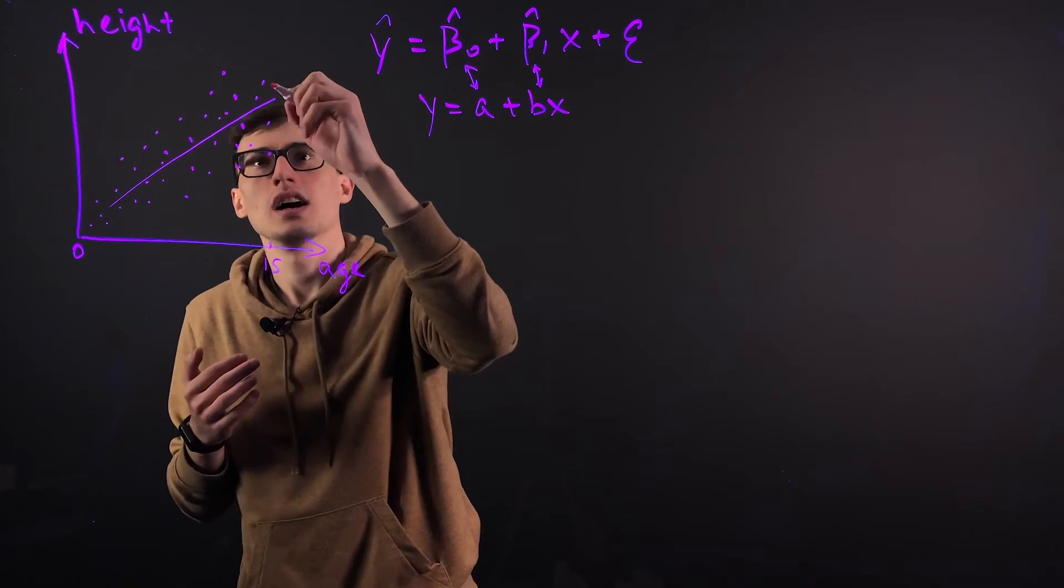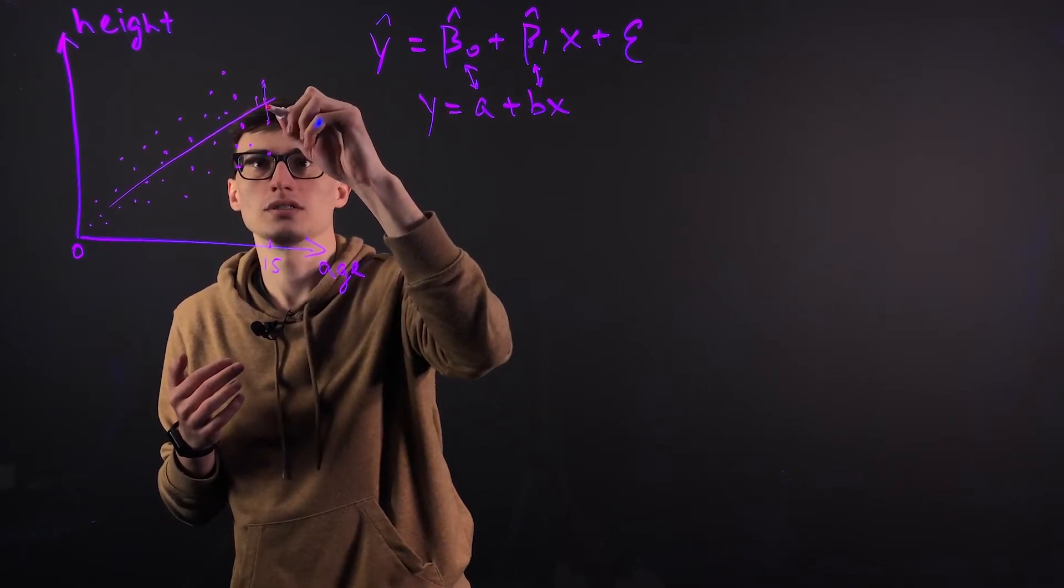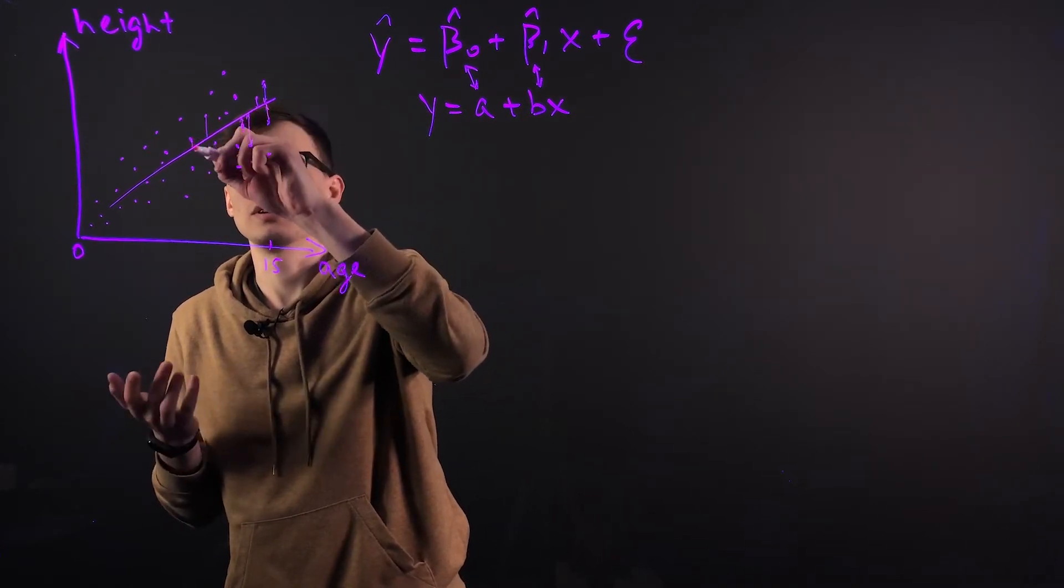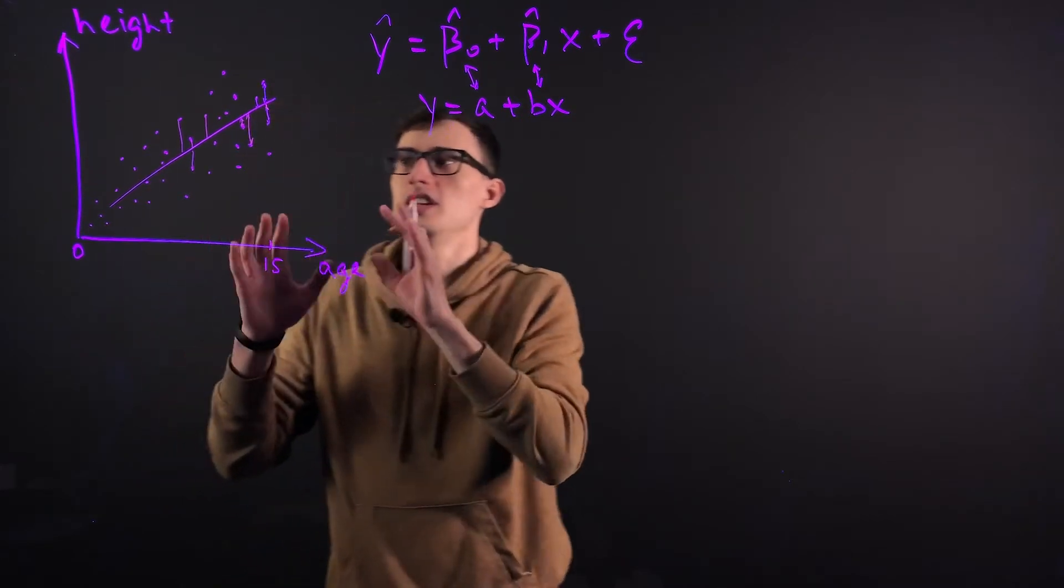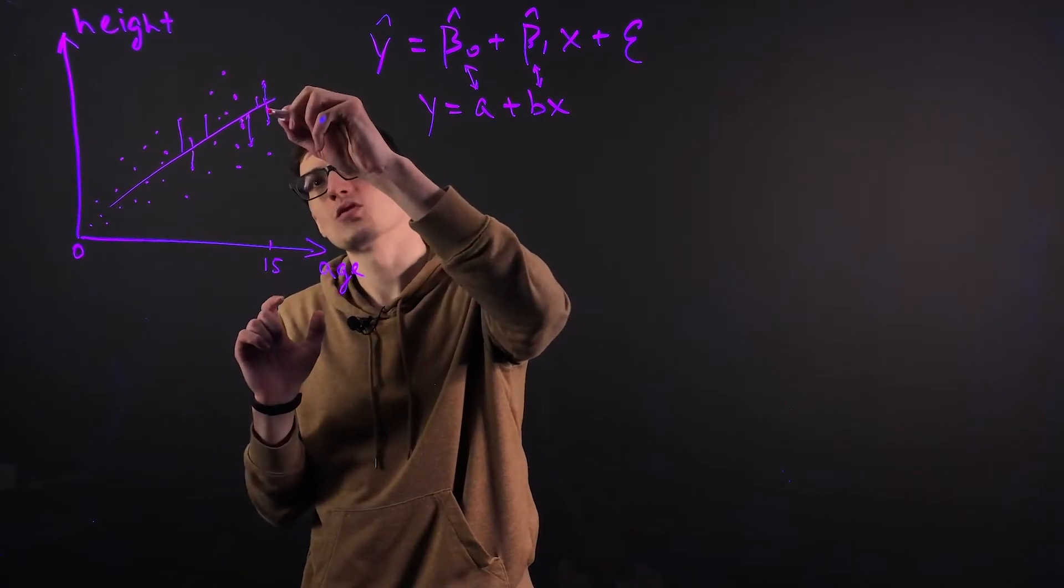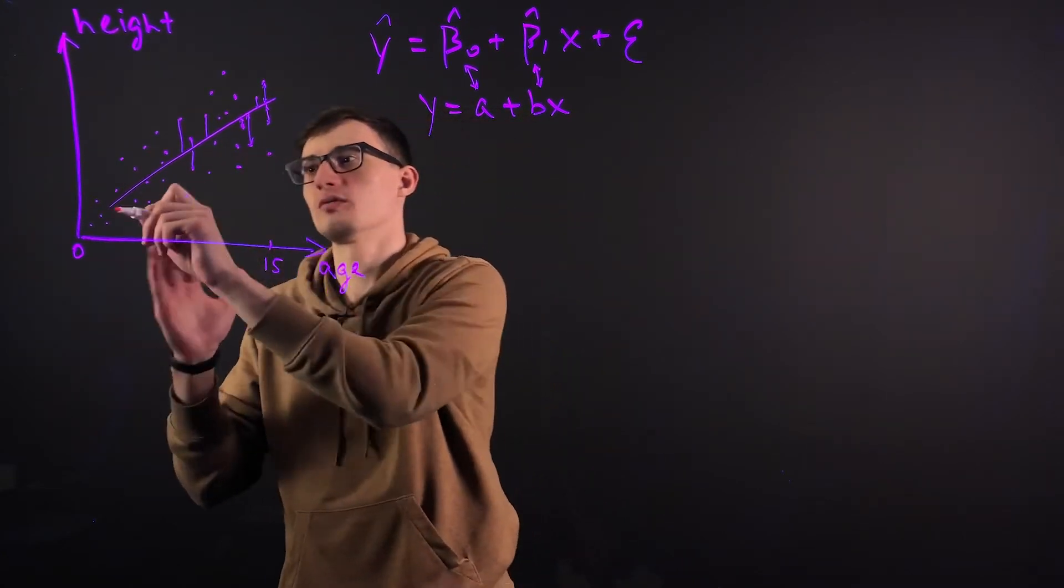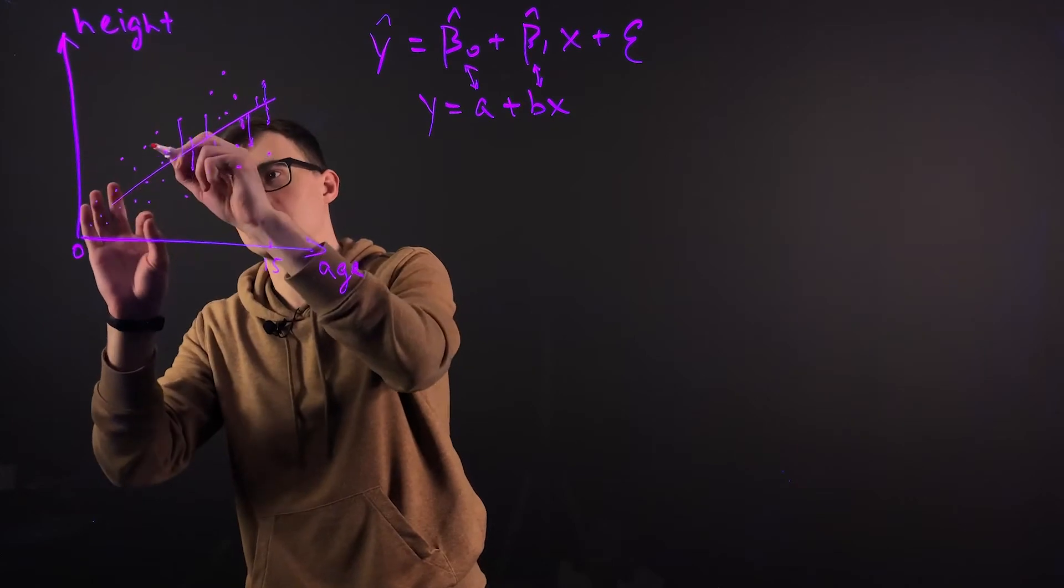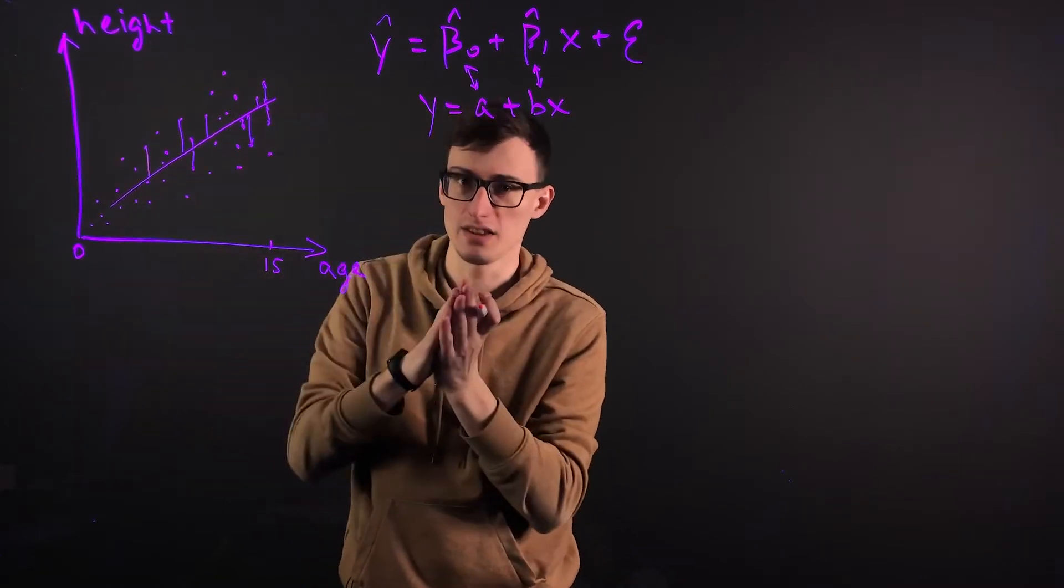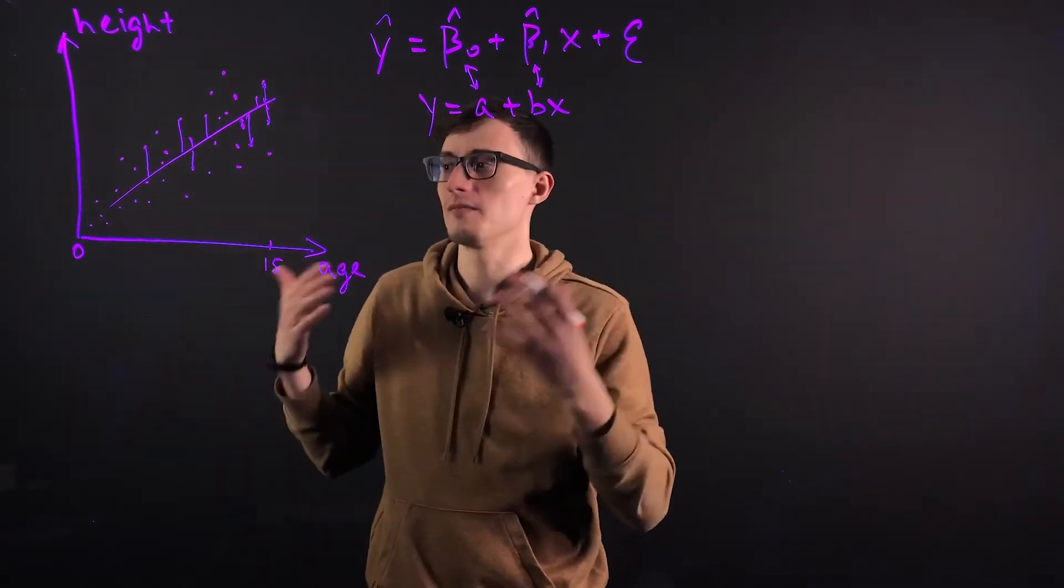But here's what it breaks down to. The line that we draw, each point will be a certain distance away from the line. It'll either be above or below a certain distance. And what a linear regression is, is we want to draw a line that minimizes the sum of the squares of these distances. That's why it's called ordinary least squares. Because we want to draw a line where the distance from each of the data points, if we square all these little lines and we add them together, we want that number to be as small as possible. Because that means we drew a line that fits the best.